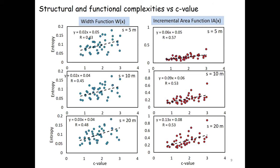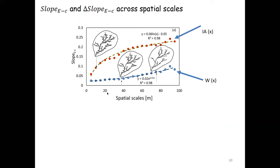This can be more clearly seen from this curve where we plot the slopes of entropy as a function of C value with scales. The red curve shows the incremental area function, whereas the blue curve shows the width function. From here we clearly see that the incremental area function has a higher slope, or rate of change of entropy as a function of C value, compared to the width function.